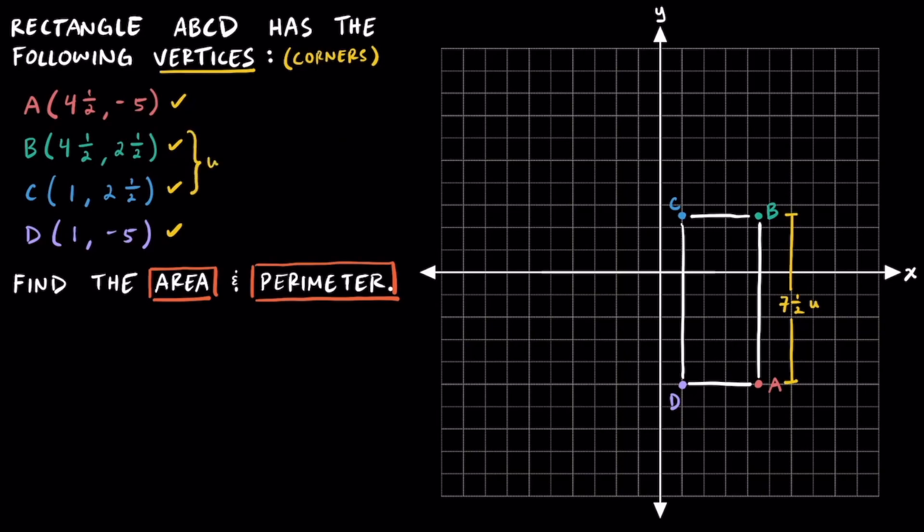As for the width of the rectangle, we can find the distance between points B and point C, and notice that they have matching y values of positive two and a half. If that's the case, we can find the distance between their x coordinates of positive four and a half and positive one. However, instead of adding their absolute values, we're going to subtract them because B and C are in the same quadrant. Subtracting their absolute values, we find out the width of this rectangle is going to be three and a half units.